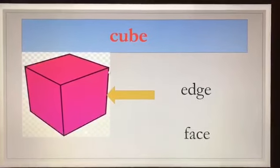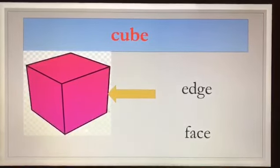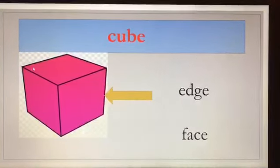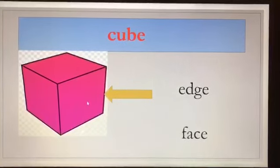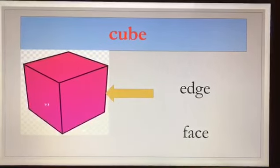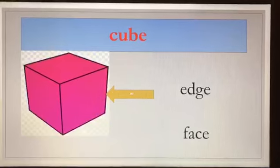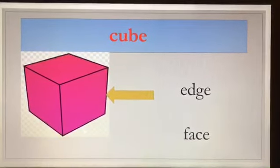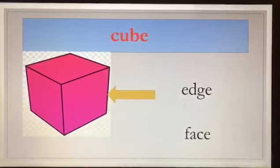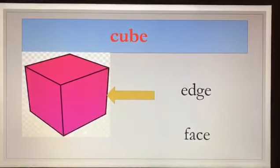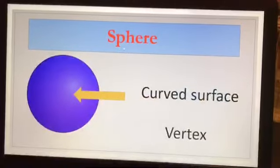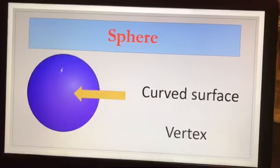Let's see the next shape. This shape is called a cube. See the arrow — what is it showing us? These lines are called the edge, and this flat part is called the face. The arrow is pointing on the edge, so the answer is the edge. We have to circle the edge.